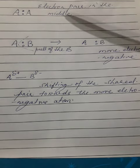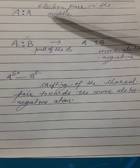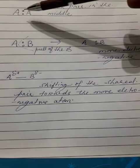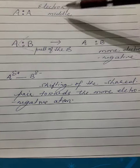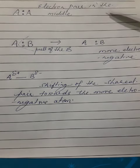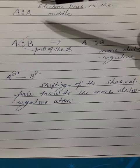Take example number one. A single covalent bond is formed between two similar atoms, that is A and A. So the shared pair of electrons is in the middle, exactly in the middle.